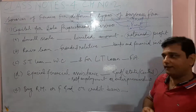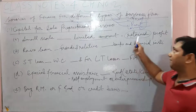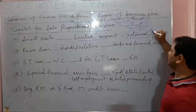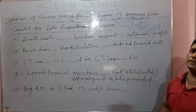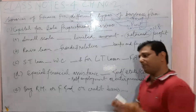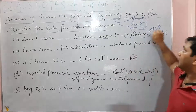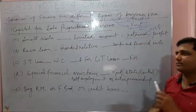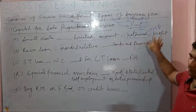Retained profit means reinvesting their profit back into their business — that is the concept of retained profit. In other words, it is called net profit. Net profit comes from sales minus expenses. When expenses are less than sales, that difference is the net profit, which we reinvest back into our business.